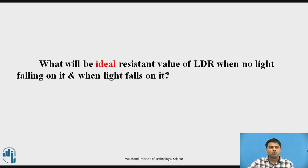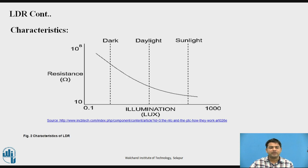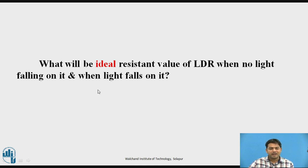Now, what should be the ideal values of the LDR? When light is falling on it, and also when no light is falling on it — what should the ideal dark value of resistance be, and what should the value be when full light falls on it? The ideal dark value should be infinity, and when full daylight is falling on it, the value should be zero. These are the two ideal values of the LDR.